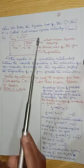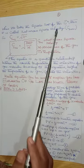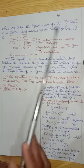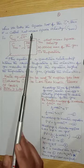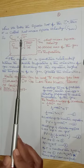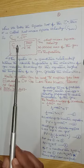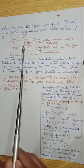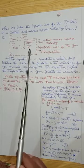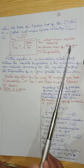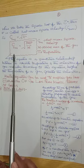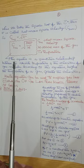When we take the square root of c̄², the mean square velocity, we get the root mean square velocity. C_rms is equal to the square root of 3RT/M, where M is the molar mass of the gas and T is temperature. This is the root mean square velocity equation.